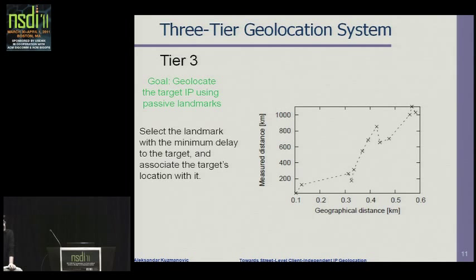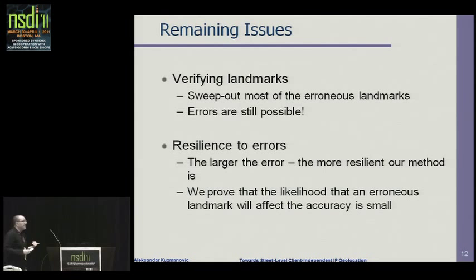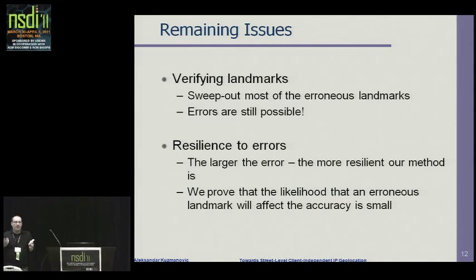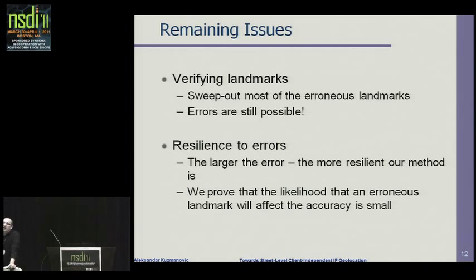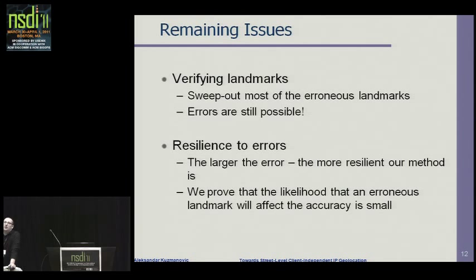I'm quickly going to mention things in the paper that I'm not covering here. The first is verifying landmarks — the methods we use to check whether a given landmark is at a given geographic location. We also have a theoretical analysis on resilience to errors. We have shown that even if the landmark location is not where we think it is, the error introduced in geolocation is still limited. I'll be happy to explain more at the end.